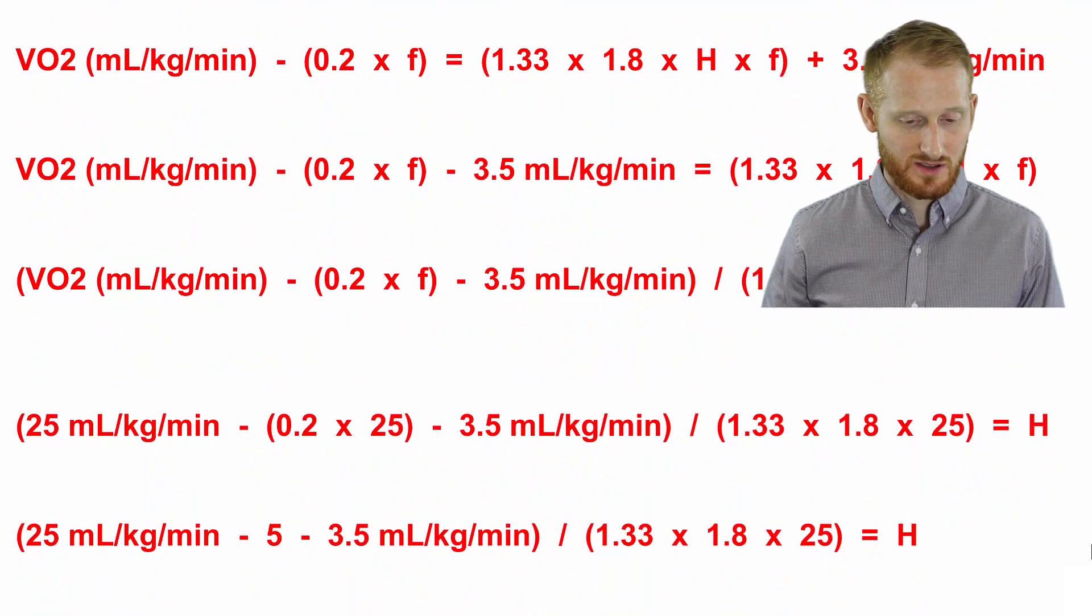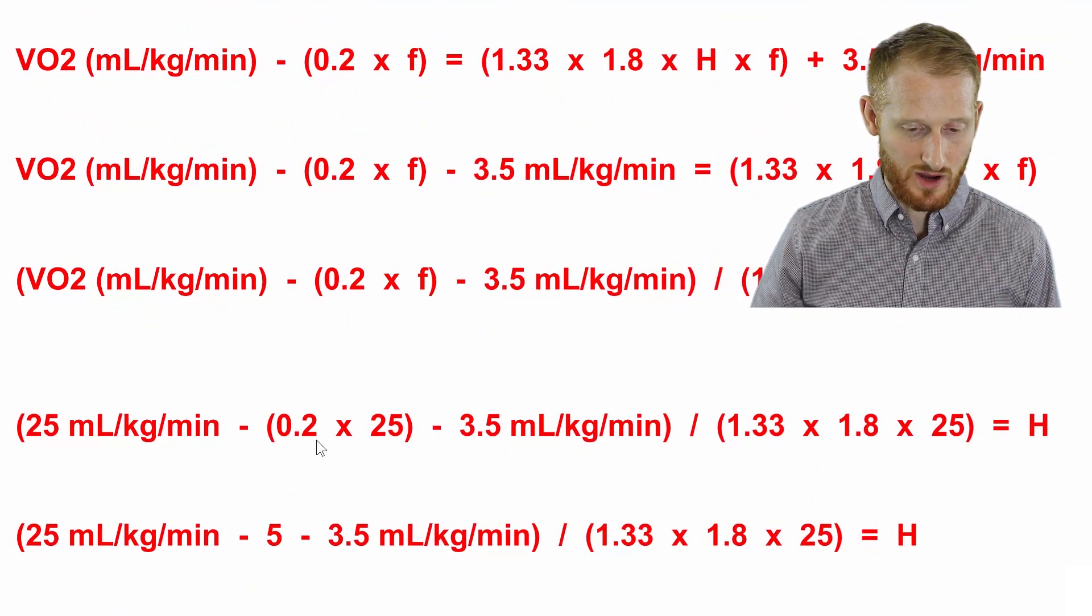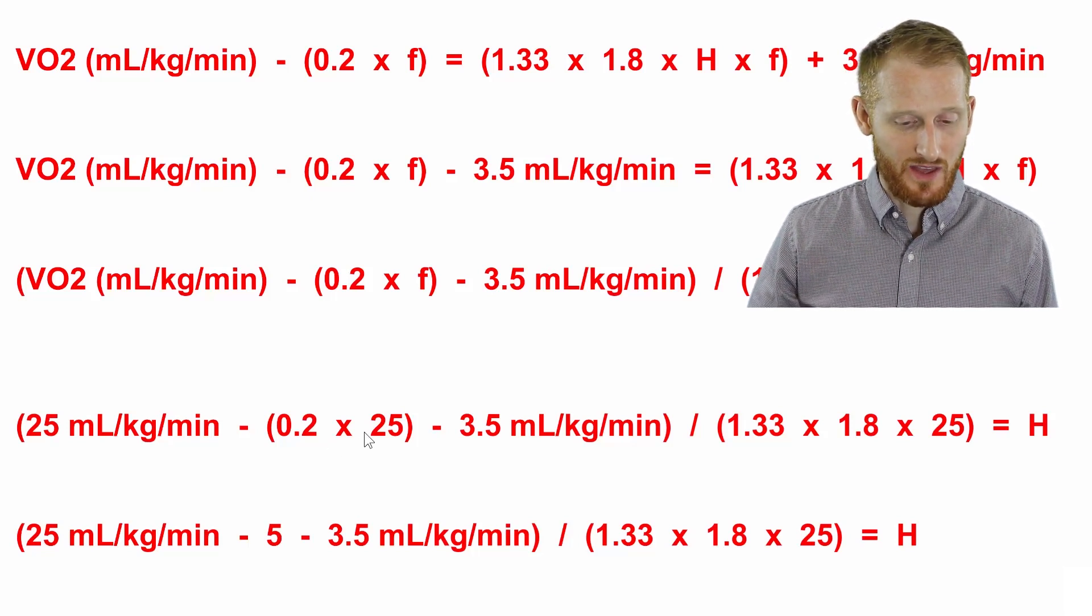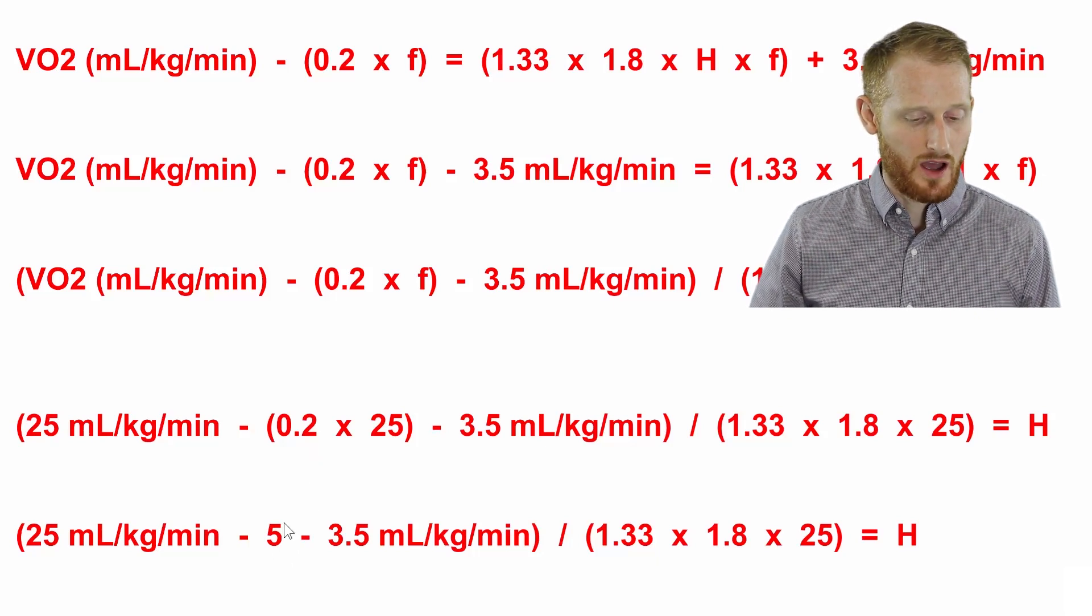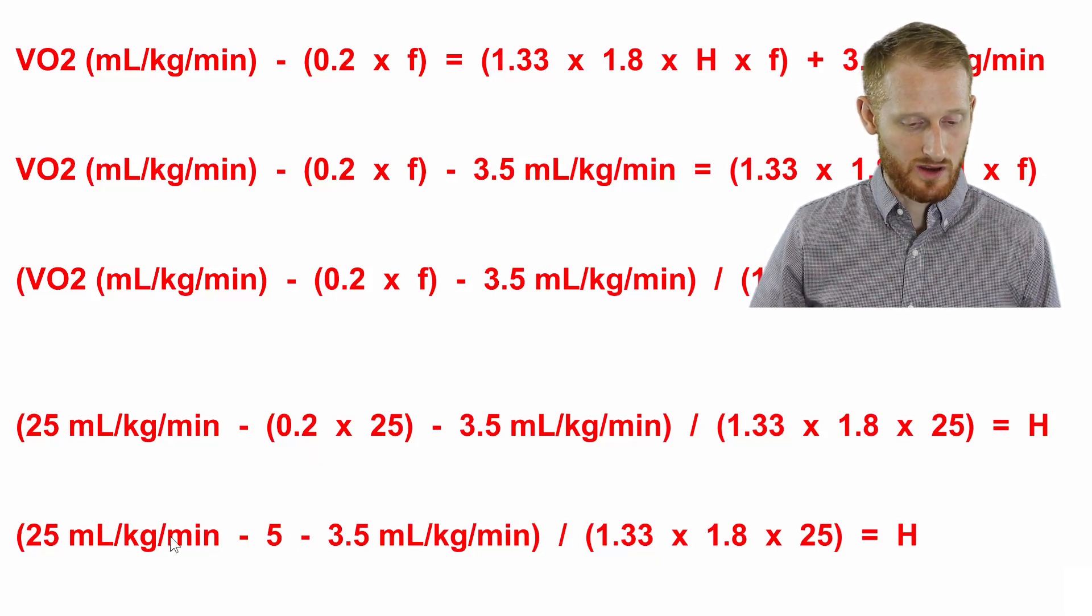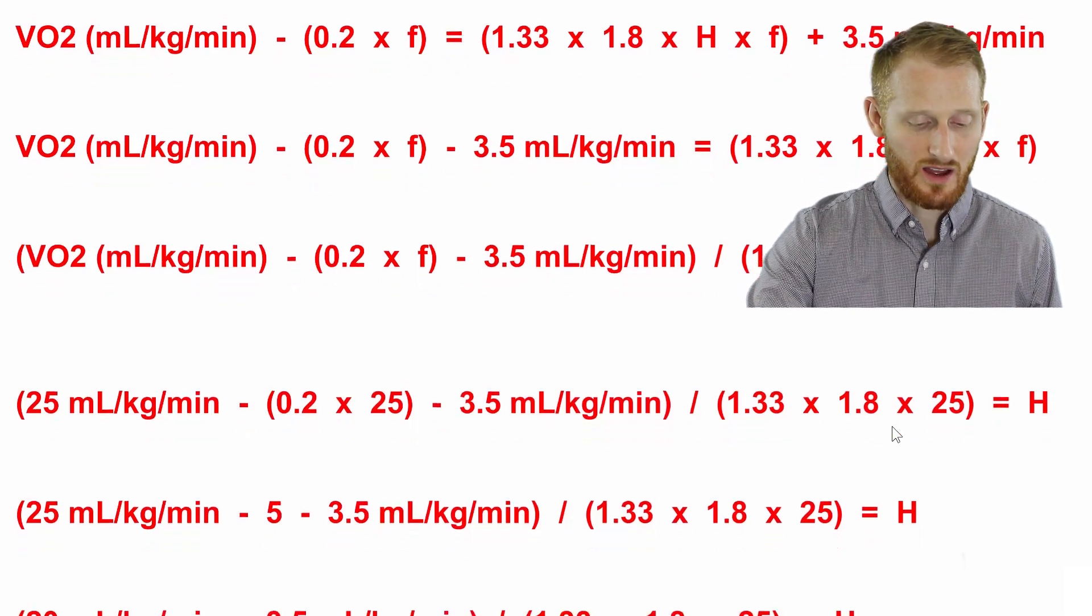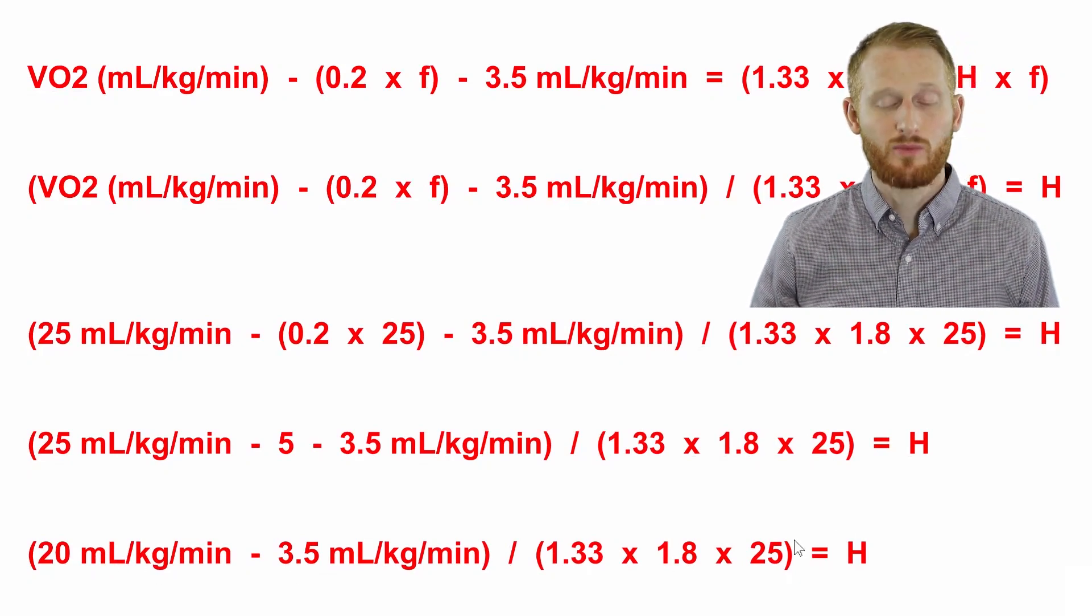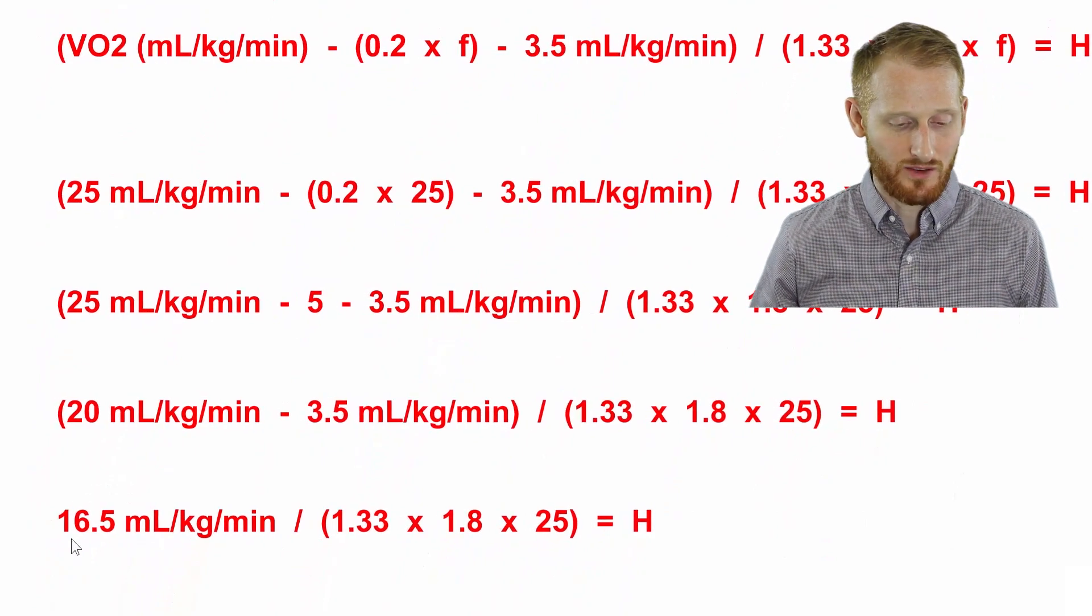I'm going to start with the innermost set of parentheses, which is this one right here, the 0.2 times 25, and that's going to give us 5. Now we're going to start working our way across this set of parentheses. So we're going to do 25 minus 5, that gives us 20. So here's our 20. Now we're going to do 20 minus 3.5, that's going to give us 16.5.